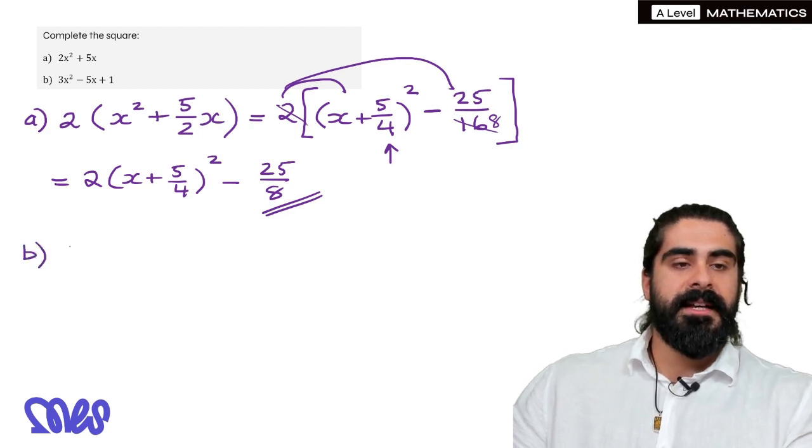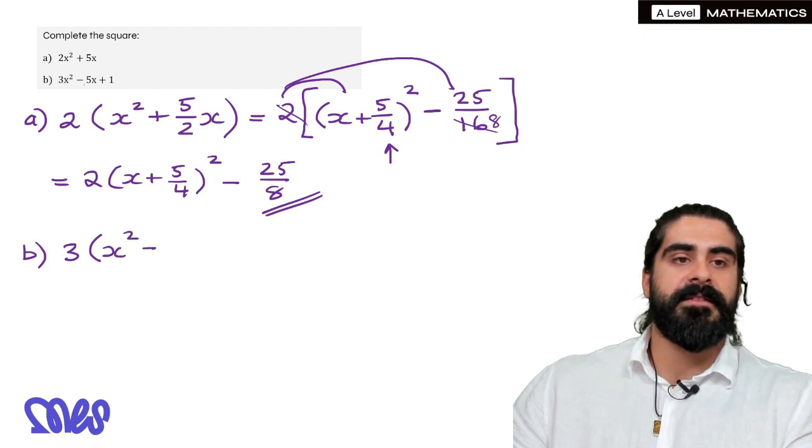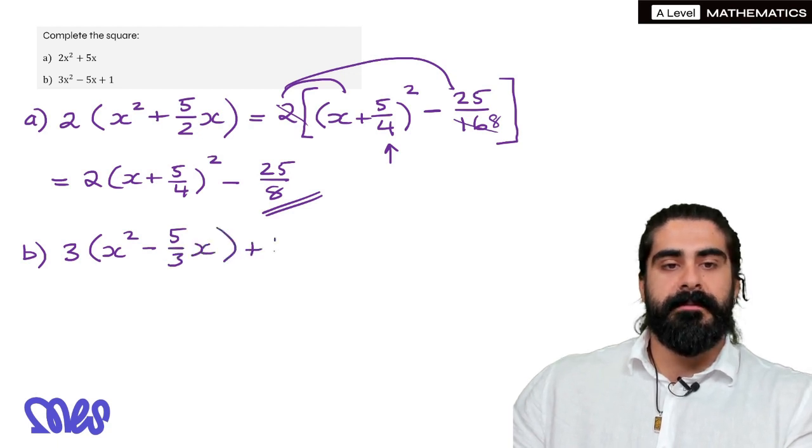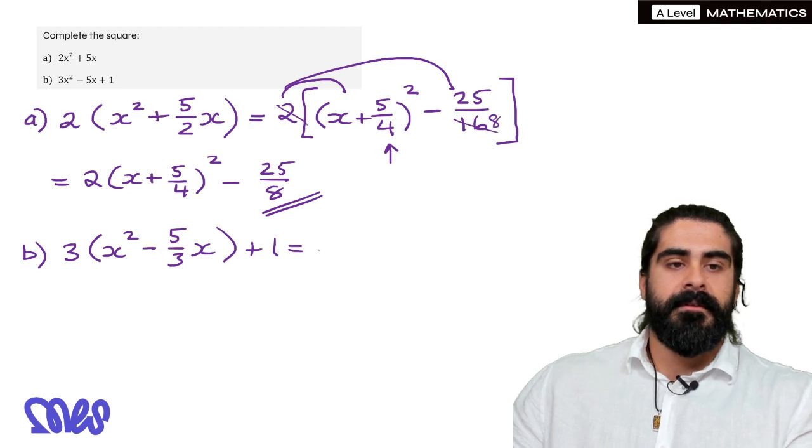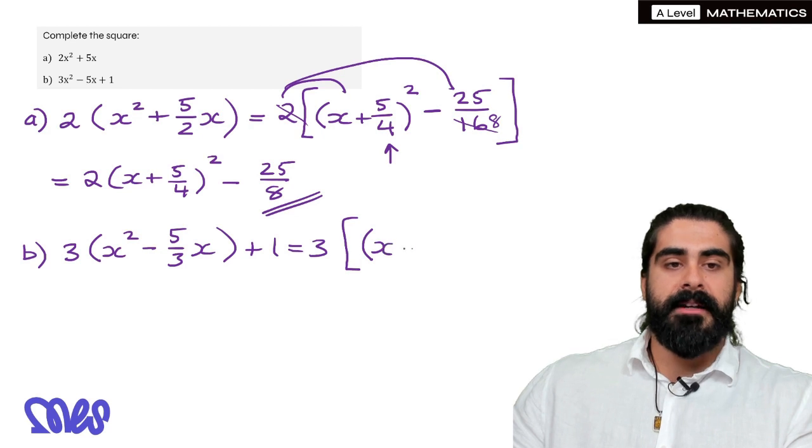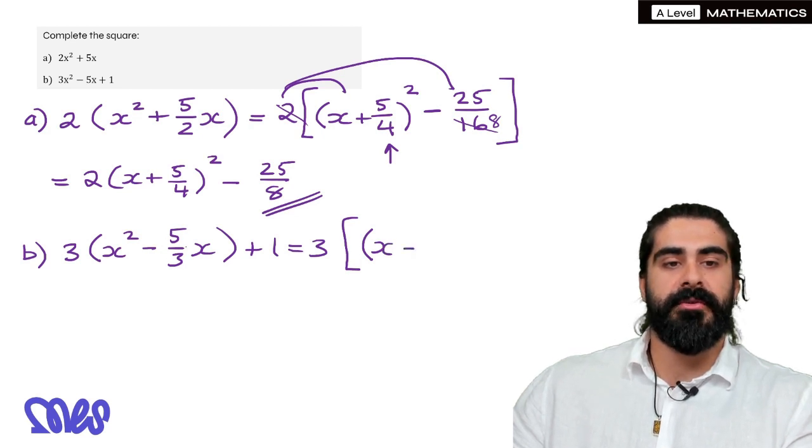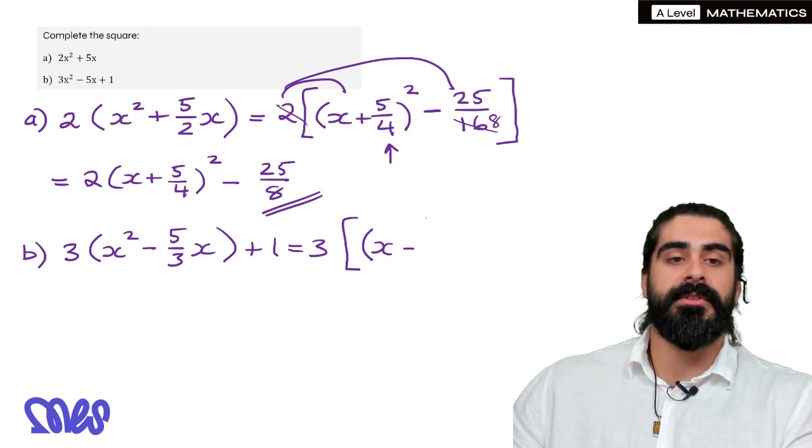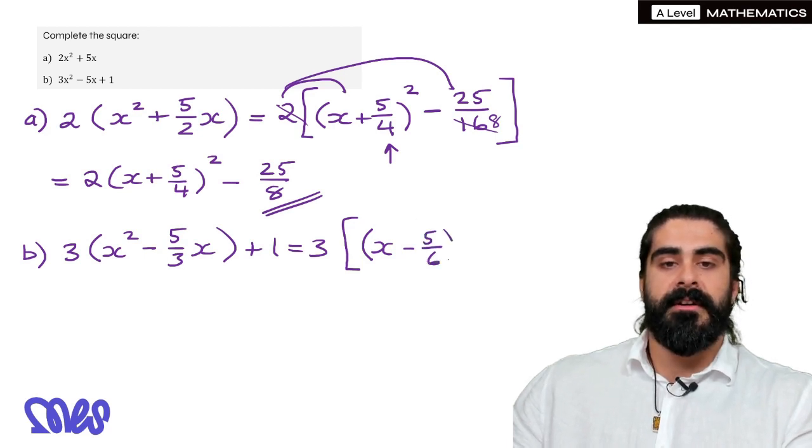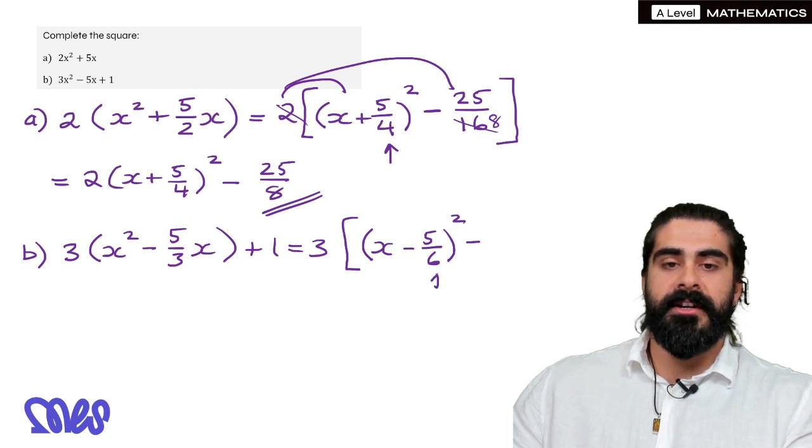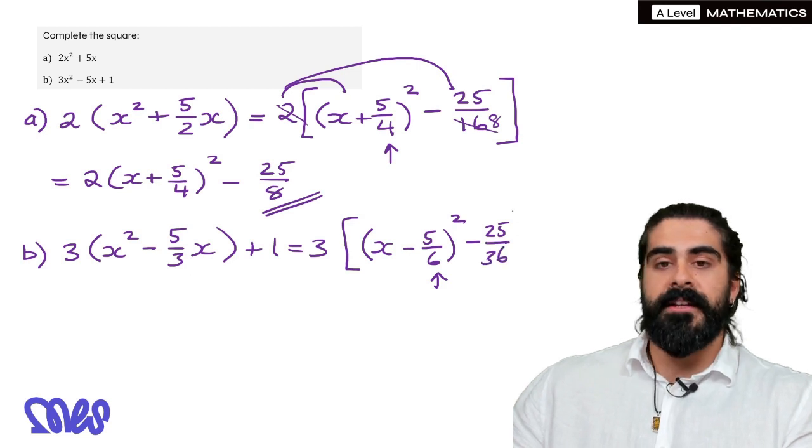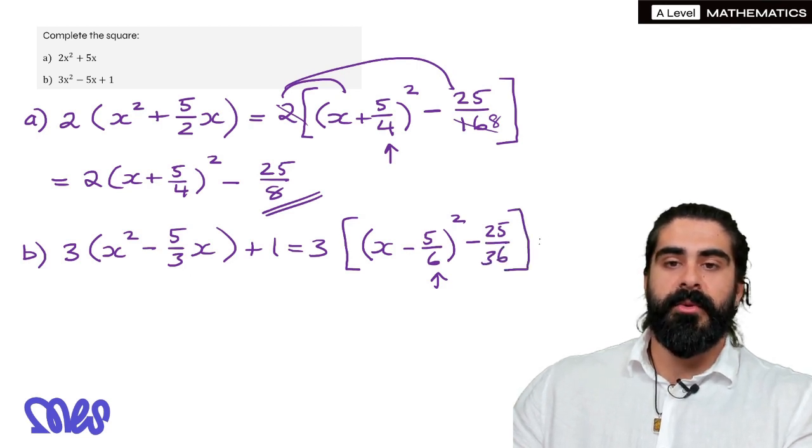Then finally part b, taking out a 3 we would have x squared minus, then we have to divide the middle term by 3 would be 5 thirds, x. Then the plus 1 is just a plus 1, we don't need to do anything with that. Now completing the square, introduce a square bracket, x minus this time, now we're dividing this middle term by 2. Remember dividing by 2 doubles the denominator, so 5 over 6 squared, then we subtract this term squared, which will be 25 over 36. Don't forget to close that bracket, then that plus 1 continues.